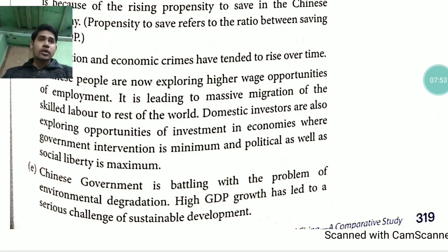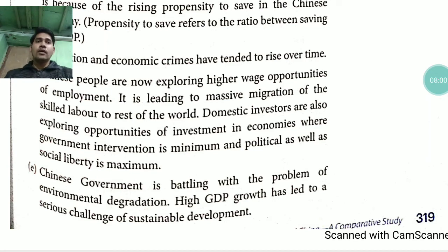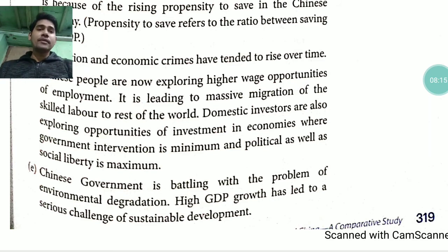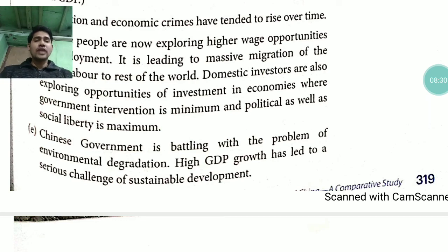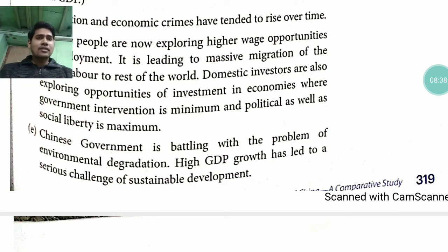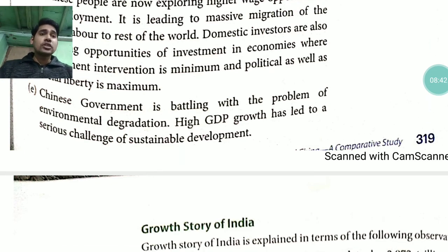Domestic investors are also exploring opportunities where government intervention is minimum and political as well as social liberty is maximum. This is giving a sign of the reason for economic slowdown. The Chinese government is battling with the problem of environmental degradation, and high GDP has led to serious challenges for sustainable development.